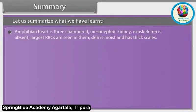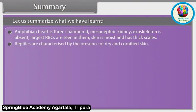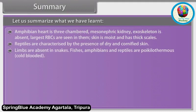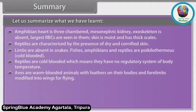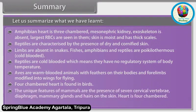Amphibians have a three-chambered heart, mesonephric kidney, exoskeleton is absent, and largest RBCs are seen in them. Skin is moist. Reptiles are characterized by the presence of dry and cornified skin; limbs are absent in snakes. Fishes, amphibians and reptiles are poikilothermous — cold-blooded — which means they have no regulatory system for body temperature. Aves are warm-blooded animals with feathers on their bodies and forelimbs modified into wings for flying. Four-chambered heart is found in birds.